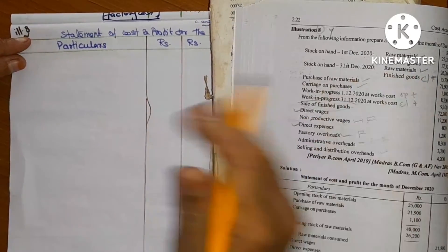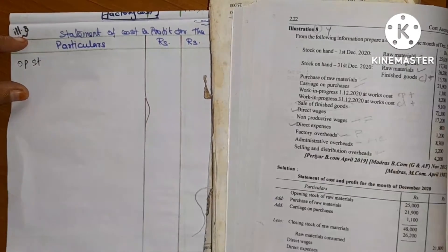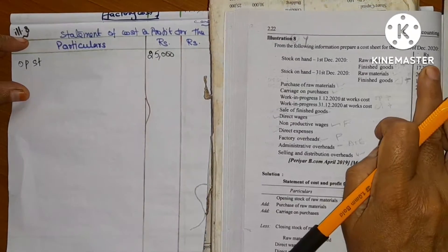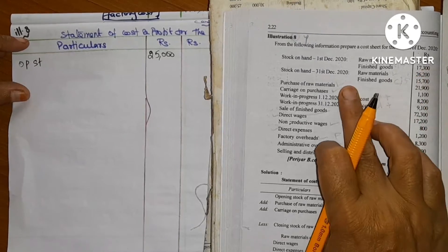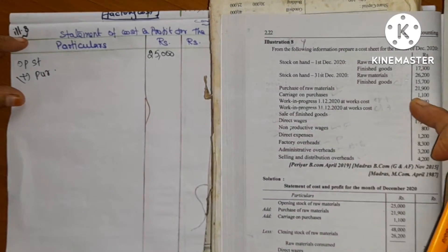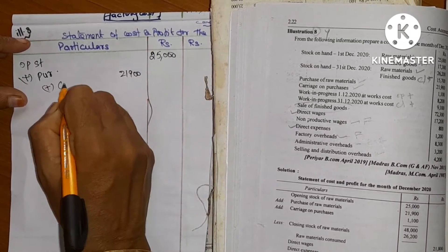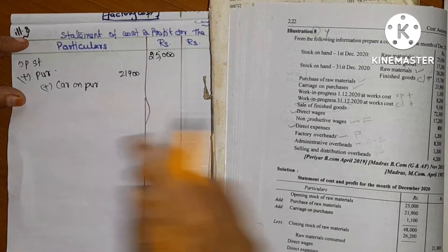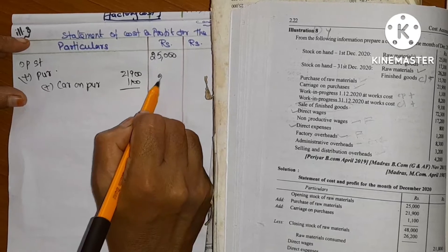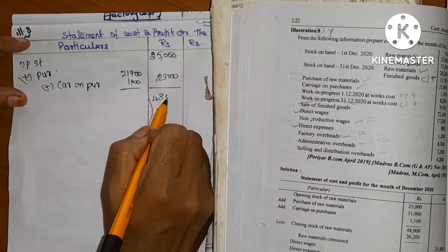First, what do we do — material consumed. Opening stock available at the beginning of the period is 25,000. Add purchases: 21,900. Add carriage on purchase: 1,100. So the total available is 48,000.